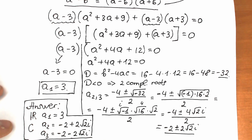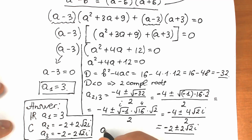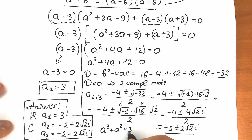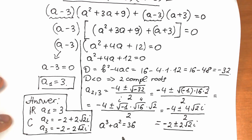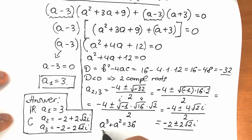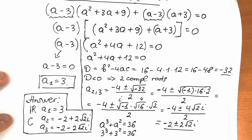Let's verify the real root. With a = 3: a³ + a² = 3³ + 3² = 27 + 9 = 36. This confirms our answer. The key trick was writing 36 as 27 + 9 = 3³ + 3² at the beginning.